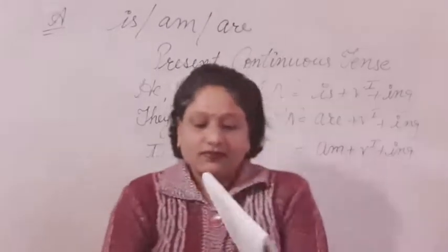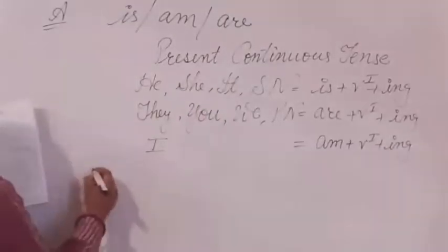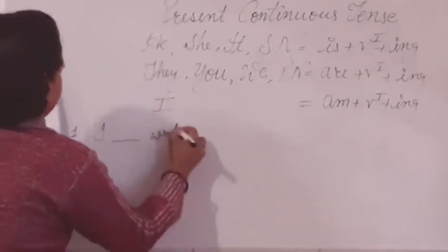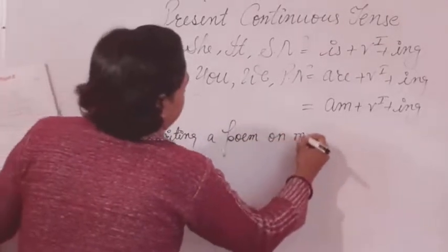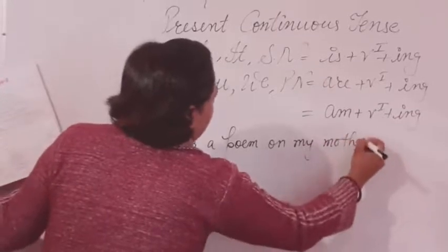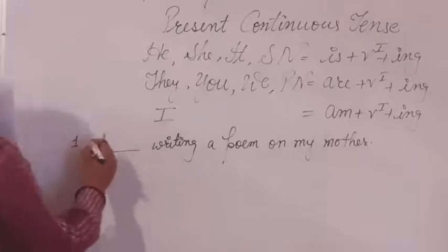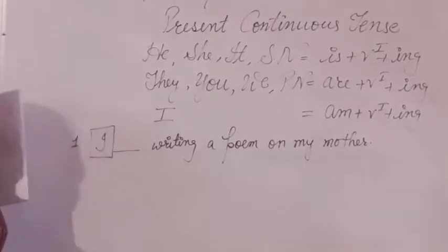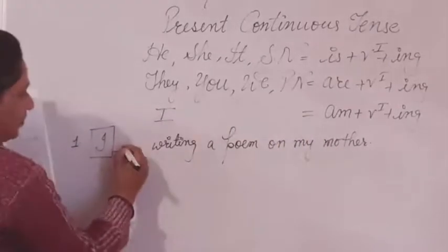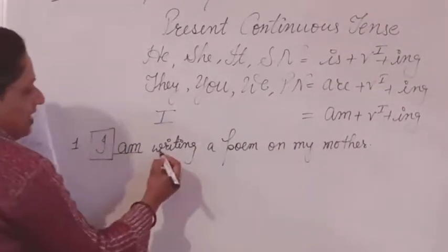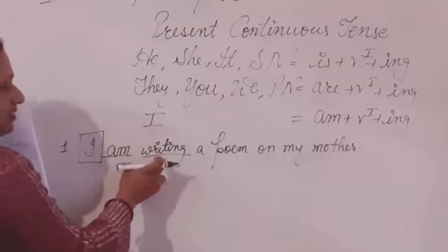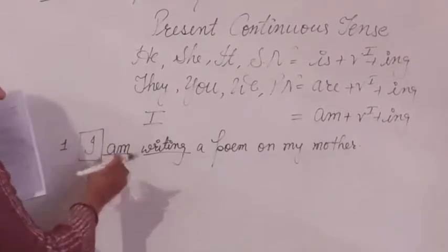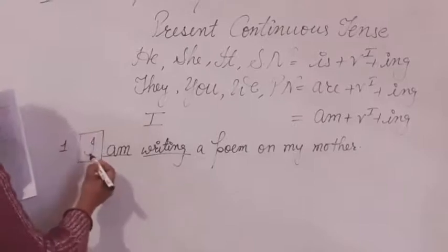The first sentence is: I blank writing a poem on my mother. Here, the subject is I, so with I we use AM. The main verb is already given with ING, so we only apply the helping verb. The answer is: I am writing a poem on my mother.